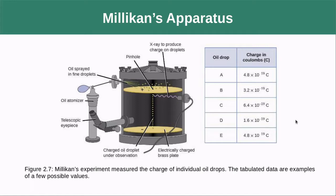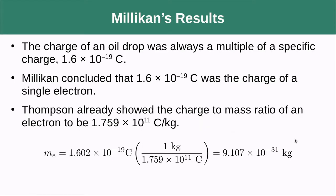When he did that, he got values that appear in this table, and he figured out that all of these values have a common divisor: 1.6 × 10⁻¹⁹ coulombs. So he determined there was some particle with that charge, and different amounts of these particles in each oil droplet led to the different charges he measured.